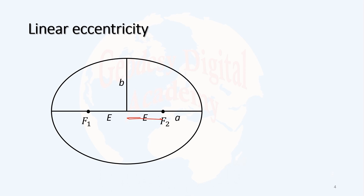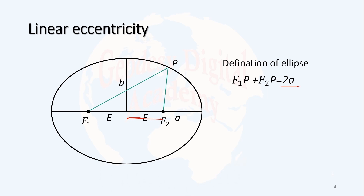But how can we determine it? We know that a circle is the locus of all points at a constant distance from one point. An ellipse is defined similarly — it is the locus of all points whose total distance from two focal points is constant. For a point P on the ellipse with focal points F1 and F2, the sum of distances F1P and PF2 is always constant, and it is equal to 2a — twice the semi-major axis.